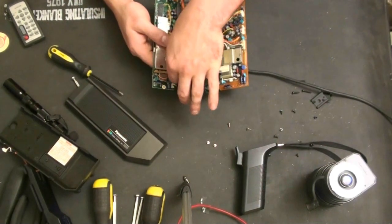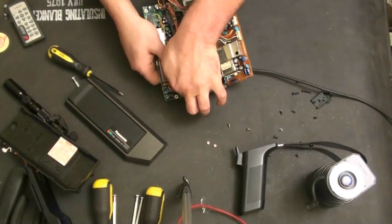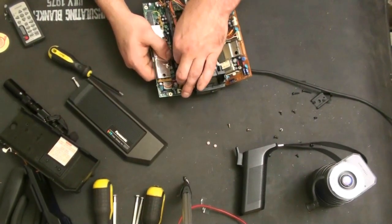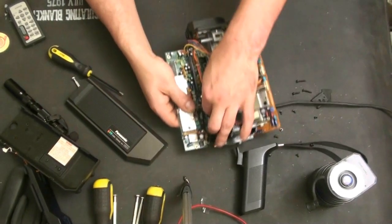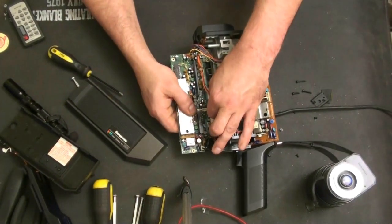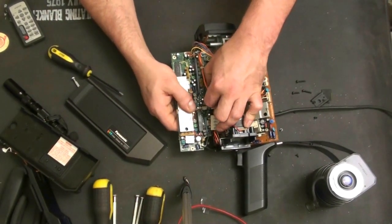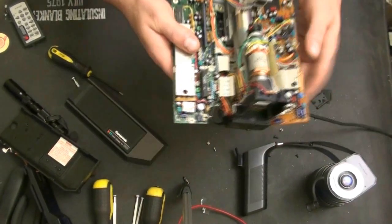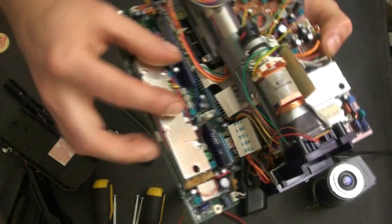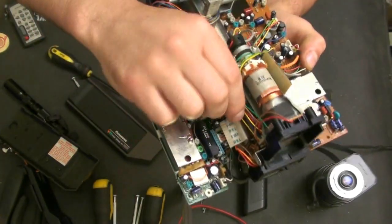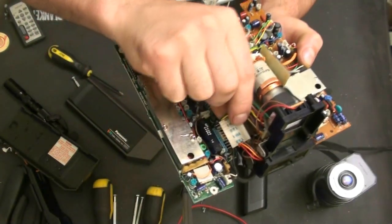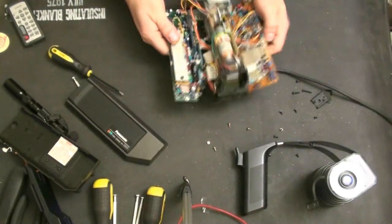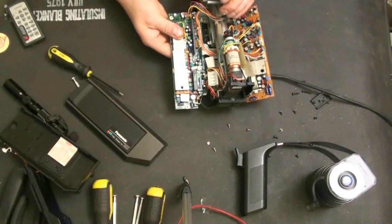And there's a flex cable underneath the two to connect the two boards. So let's see if we can remove these ribbon connectors carefully. Actually, these aren't ribbon connectors. They're actually small pin connectors. You can see that. There's little pins on those.